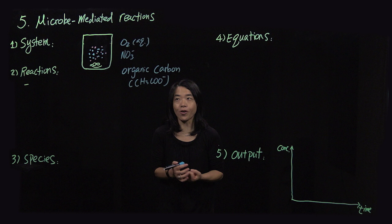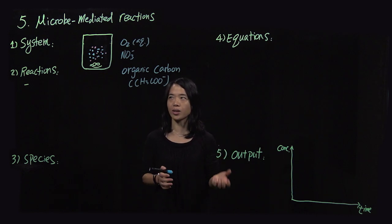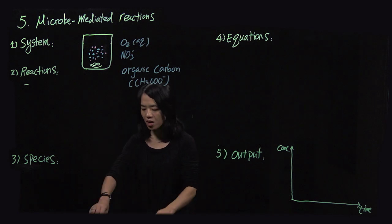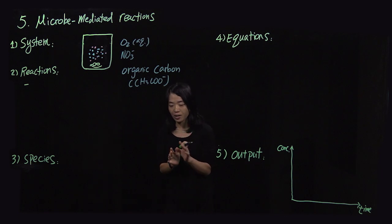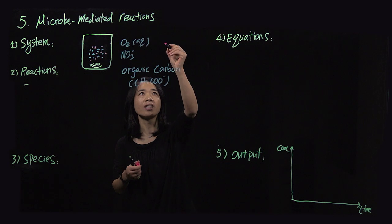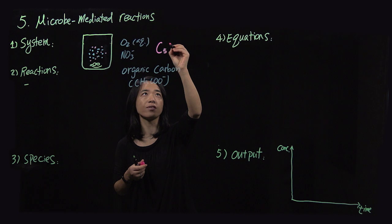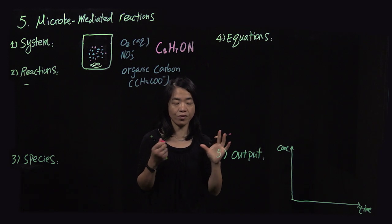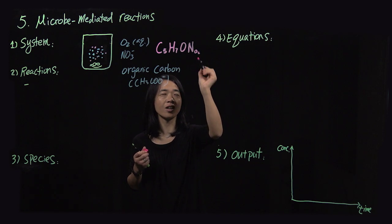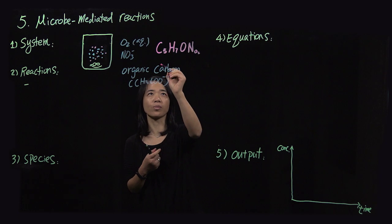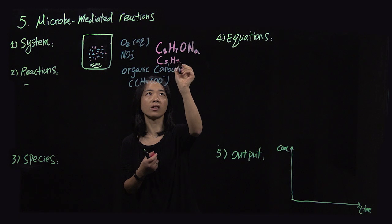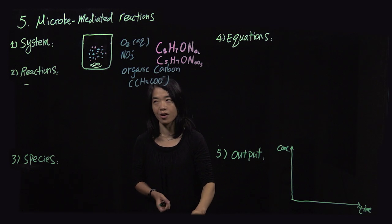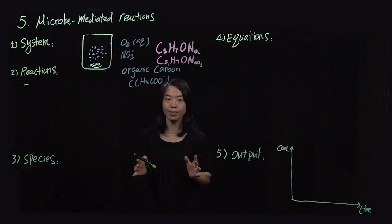We know this system is going to have something going on. It's a well-mixed system, meaning we are not talking about transport, dispersion, or diffusion yet — there is no concentration gradient. The bacteria formula is C₅H₇ON, and we distinguish between the two types by the electron acceptor they use. So those are all the players in the system.